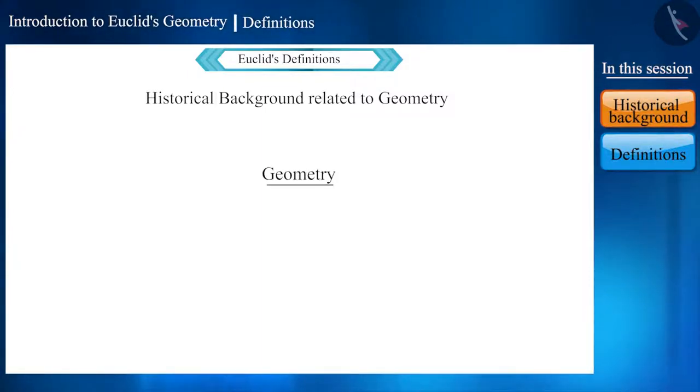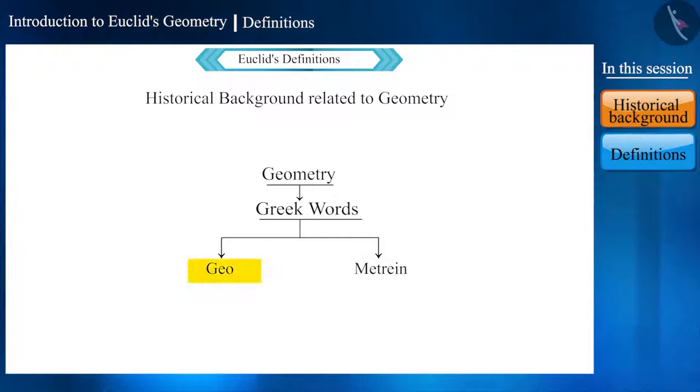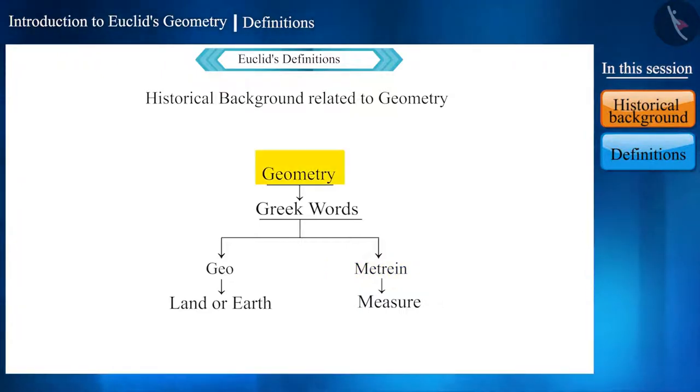Let's begin with some historical background related to the origin of geometry. The word geometry originated from two Greek words: geo and metron. Geo means earth or land, and metron means to measure.